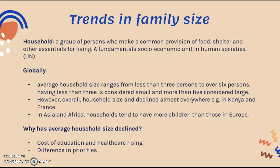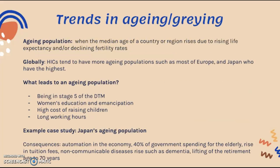For example, household size has declined in Kenya and in France. On the other hand, in Asia and Africa, households tend to have more children than those in Europe on average. Why has household size declined? It's because of increasing costs of education and healthcare — raising children has become more expensive — as well as a difference in priorities within society. In less developed countries, children are often seen as economic assets, hence family sizes tend to be larger.